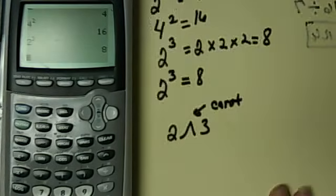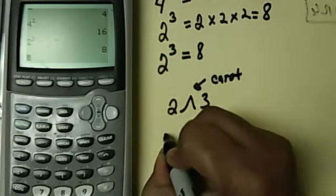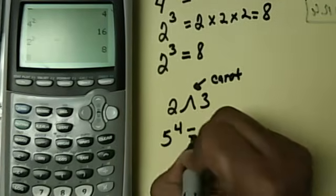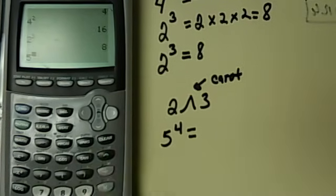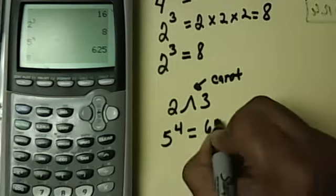Alright, so the last one here I want to put in 5 to the 4th power. So I want to put in 5 caret then 4, and then hit enter, and then I get 5 to the 4th which is 625.